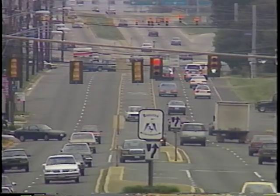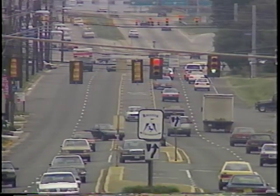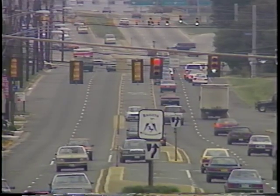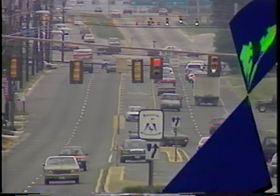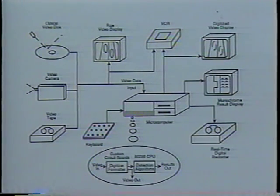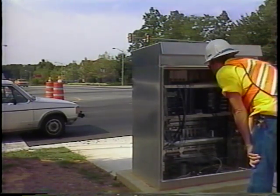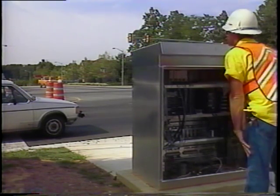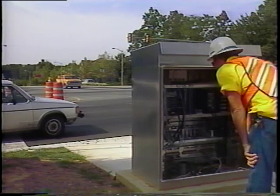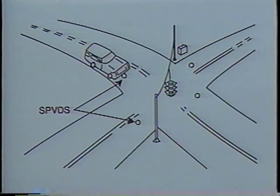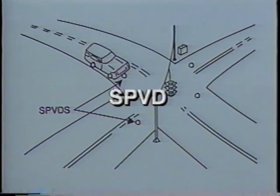Now let's look at today's detector technology and where it's going. The control and surveillance of traffic is a priority for the 90s, and new technology is a major investment in the United States, Europe, Australia, and Japan. This technology includes new concepts, new products, new applications, and new procedures. Loops have a relatively short life for a variety of reasons; therefore we are also looking into substitutes for loop detectors which are at least as accurate.